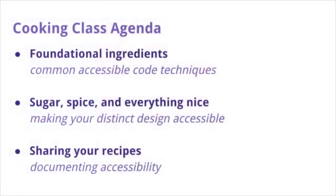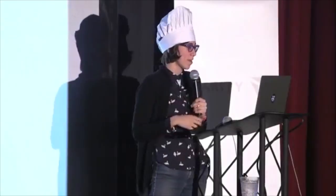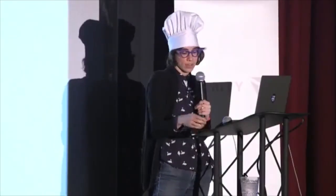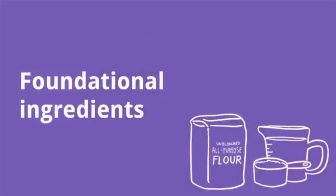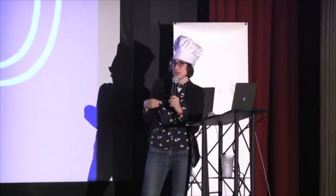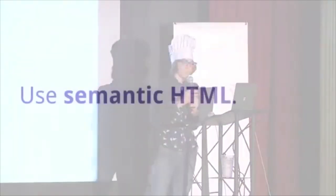Let's talk about how to build those systems. Our agenda for today's cooking class covers three things: first, the foundational ingredients of accessibility — making accessible code; second, the sugar, spice, and everything nice — the unique elements of your design system and how to think about accessibility there; and finally, how to share those recipes and the importance of documentation.